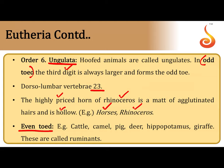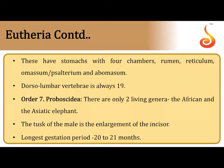Even-toed ungulates (Artiodactyla) include cattle, camel, pig, deer, hippopotamus, and giraffe. They have a complex four-chambered stomach — rumen, reticulum, omasum (psalterium), and abomasum — in which fermentation occurs, making them ruminants. They have a total of 19 thoracic and lumbar vertebrae.